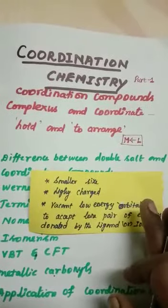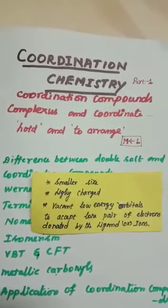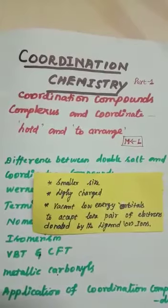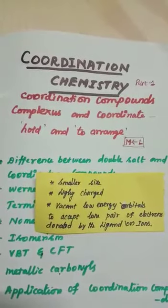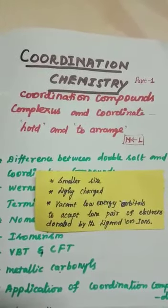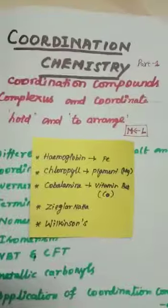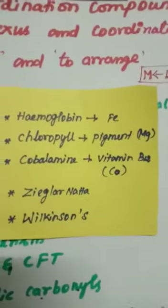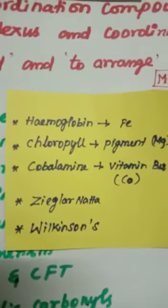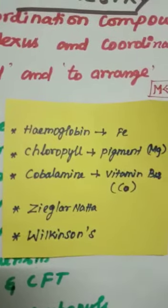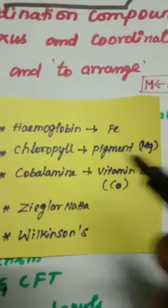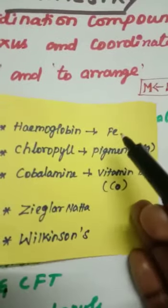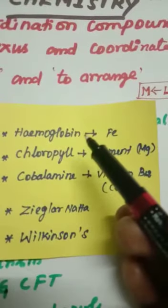These complex compounds play very important roles in biological functions and also in chemical industries. For example, hemoglobin, which is the oxygen transporter of humans, contains a metal ion. It is a complex compound.